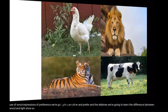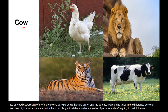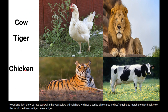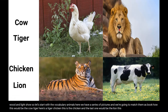Let's start with the vocabulary: animals. Here we have a series of pictures and we're going to match them as the name comes by. For example, 'cow' — this will be the cow. 'Tiger' — here's a tiger. 'Chicken' — this is the chicken. And the last one would be the 'lion' — this guy is the lion.